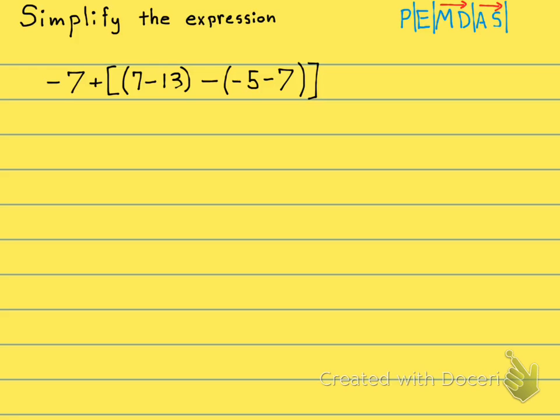So first we're going to notice that there are parentheses and there's something to do inside the parentheses. So let's do that first. Here we see 7 minus 13 inside of these parentheses and at the same time we're going to do negative 5 minus 7.